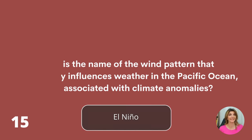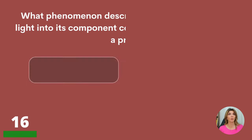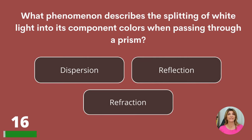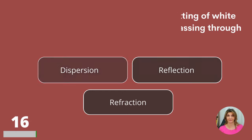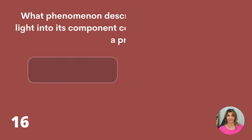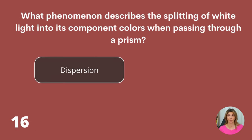Question 16. What phenomenon describes the splitting of white light into its component colors when passing through a prism? Dispersion, reflection, or refraction? Dispersion.